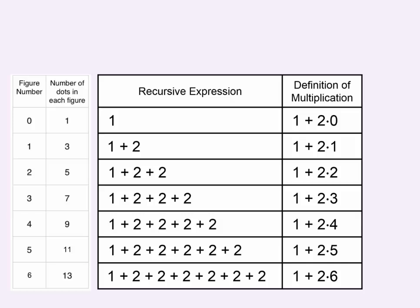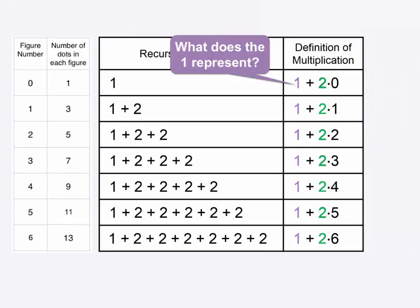Looking at the new expressions, we see that some things are staying the same and some things are changing. The starting number is always 1, and we are always multiplying 2 by some number. The 1 represents the starting number, because we started with 1.